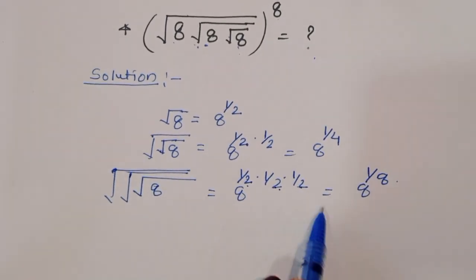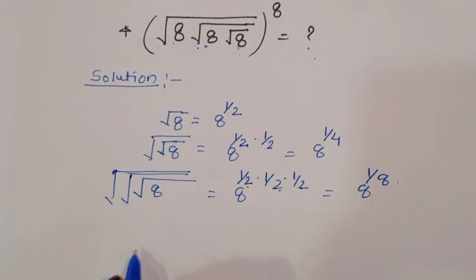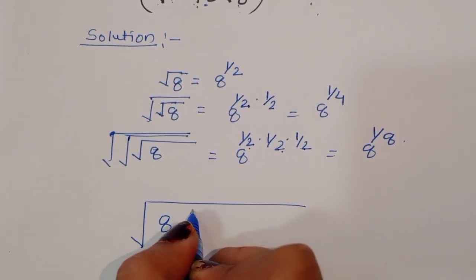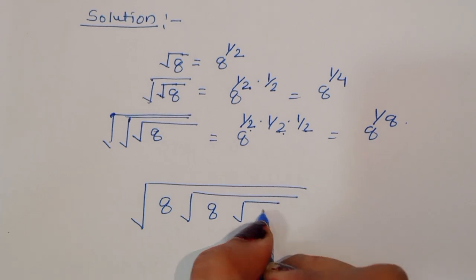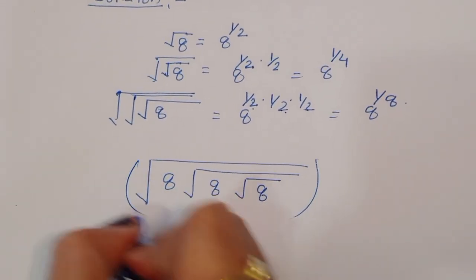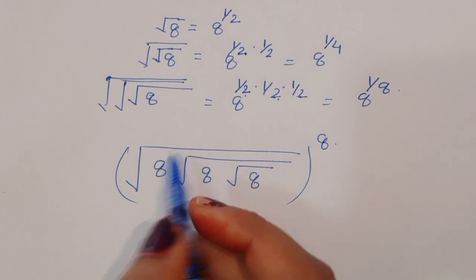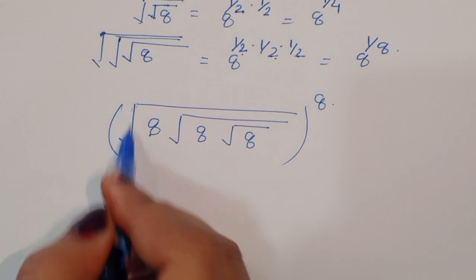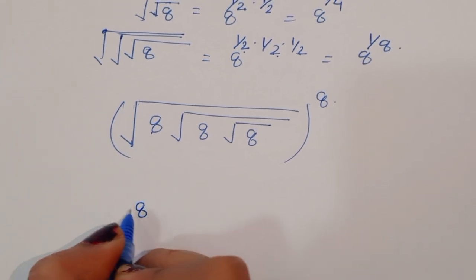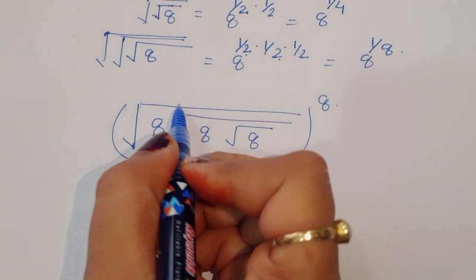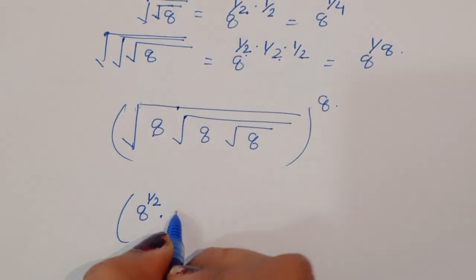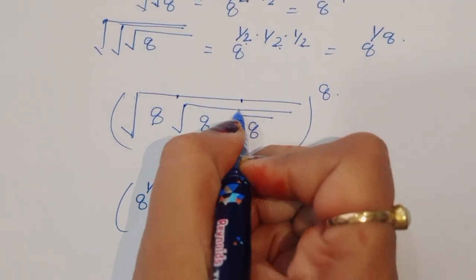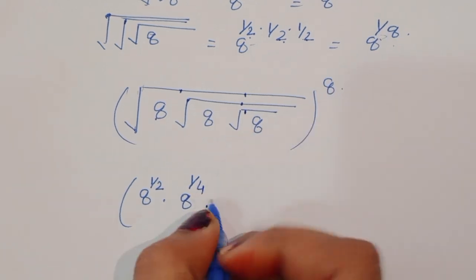Now we have to simplify. The question is: square root of 8 under square root of 8 under square root of 8, all raised to power 8. The innermost square root of 8 is 8 power 1 by 2, and applying the nested square roots gives 8 power 1 by 2 times 1 by 2 times 1 by 2 times 1 by 2, which is 8 power 1 by 8.